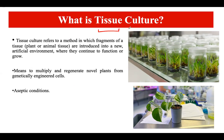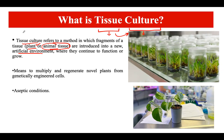Looking at the name of this technique — tissue culture — 'tissue' refers to a small part of the plant, and 'culturing' means we are using an artificial medium to culture this tissue in order to produce something. Tissue culture is a method where we take fragments from a plant or animal and introduce them into an artificial environment where they continue to function and grow to produce a fully grown organism. When we use plant tissue, we call it plant tissue culture.